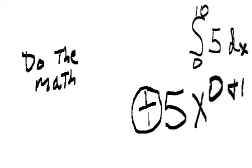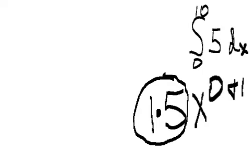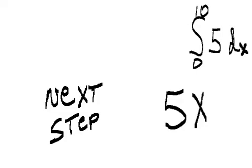Do the math: 1 over 1 is 1. 1 times 5 is 5. 0 plus 1 is 1. Next step.